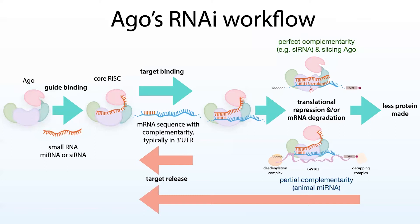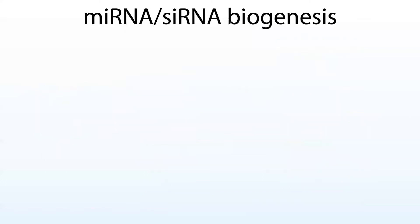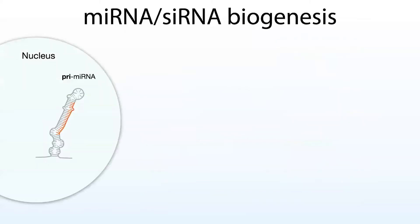Let's talk about where these small RNAs come from. In our bodies, microRNAs — we have genes for them, just like we have genes for proteins — we have genes for functional RNAs like microRNAs.